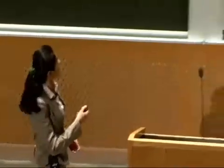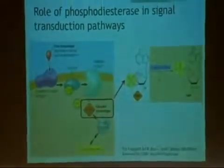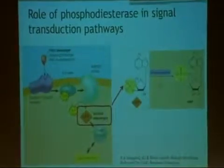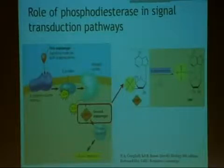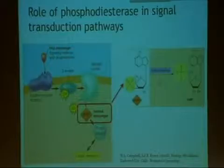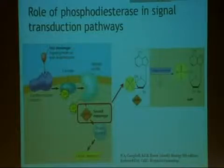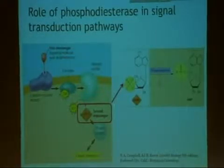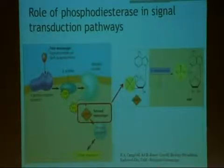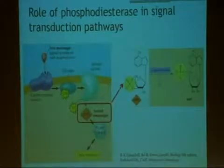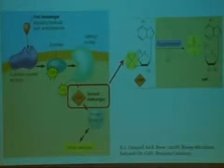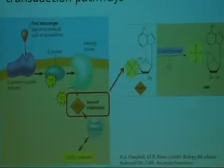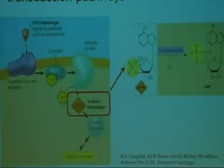Shown here is a typical signal transduction pathway. The signal begins when a chemical messenger, frequently a hormone, binds to a cell surface receptor, and then this activates the enzyme adenylyl cyclase, which synthesizes a second messenger known as cyclic AMP. Cyclic AMP then activates protein kinase A, which goes on to phosphorylate other proteins, setting forth a whole cascade of phosphorylating reactions, which finally terminate in the cellular response. PDE's role here is to degrade cyclic AMP, and this is very important because the cellular response will be terminated as soon as the initial chemical messenger is absent, allowing the cell to start responding to new or repeated signals.